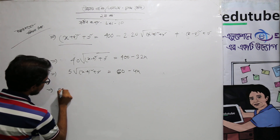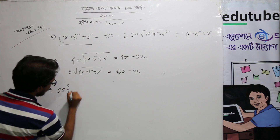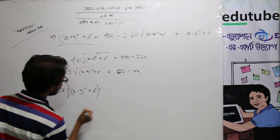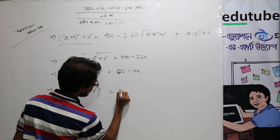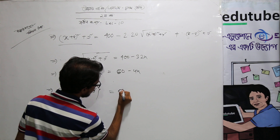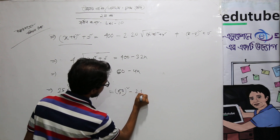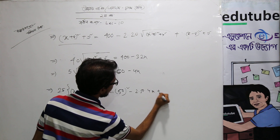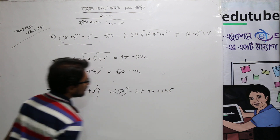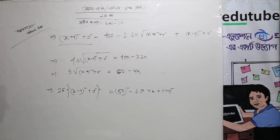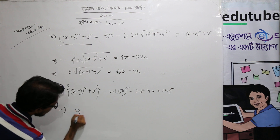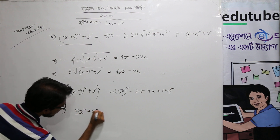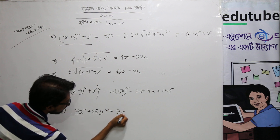Squaring both sides: 25 times (x - 8) whole square plus y square equals 50 squared minus 2 times 50 times 4x plus 4x squared. Ultimately this gives: 9x squared plus 25y squared equals 900.